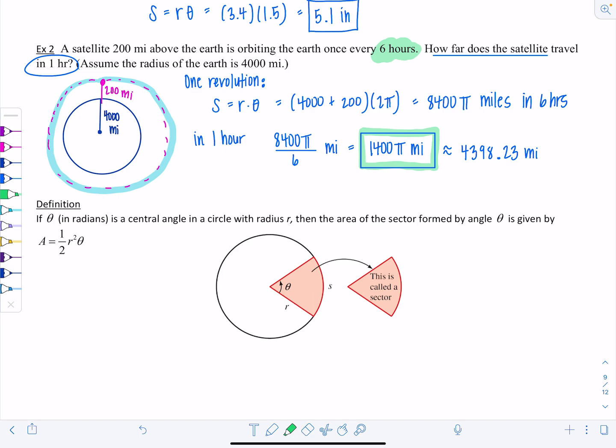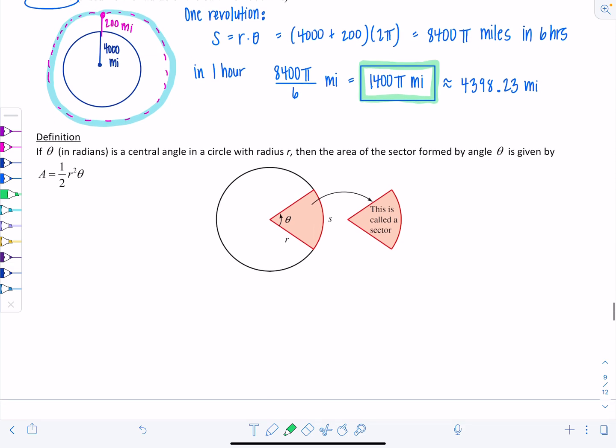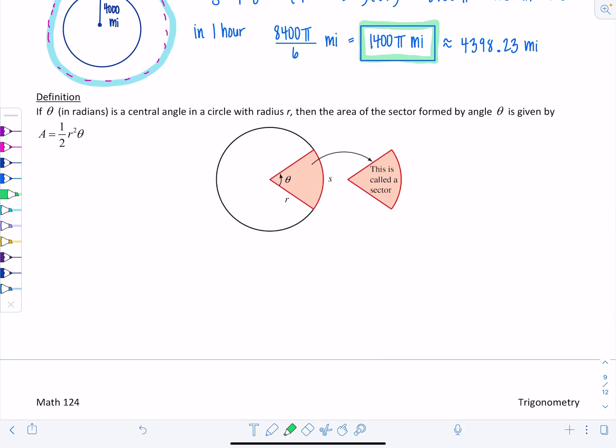That's for arc length. Next idea we're going to look at is area. If theta in radians is a central angle in a circle with radius r, then the area of the sector formed by the angle theta is given by the following formula. Area equals one-half r squared theta. A sector basically looks like a slice of a pie. This formula gives us the area of that shaded region, one-half r squared theta.